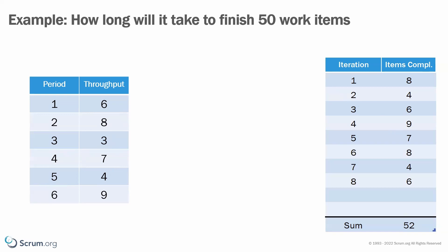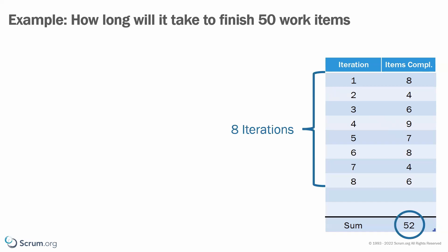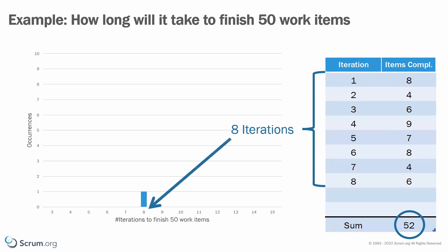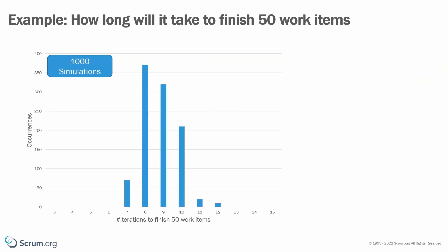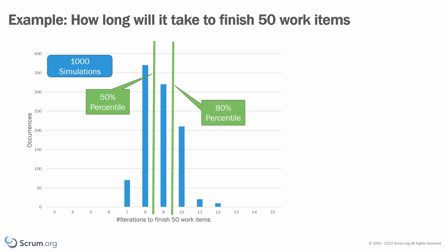Again, we use our historic data and randomly pick a throughput from one of those periods that we put into our result table — exactly what we did previously. The only difference is that we now look at the sum and stop once we have exceeded the target number of items. In our example, we are looking at the time it takes to complete 50 items. This first simulation suggests there might be a chance to finish those 50 items in eight iterations. After 1,000 simulations, we can see there is a 50% chance to finish these 50 items in eight iterations or less.